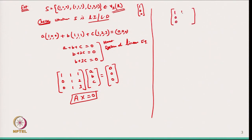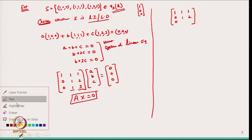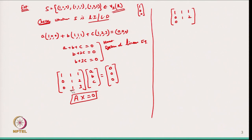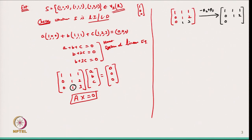After row reduction, applying R3 → R3 - R2, I get the upper triangular matrix: [[1,1,1],[0,1,2],[0,0,1]]. The last row comes from subtracting R2 from R3, giving a 0, -1 becoming 0 in the right positions. This is now in echelon (upper triangular) form.